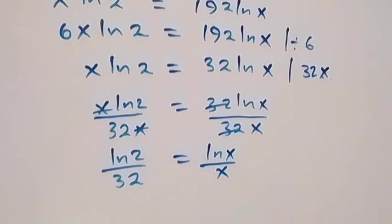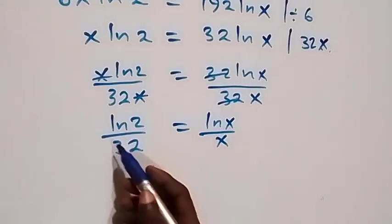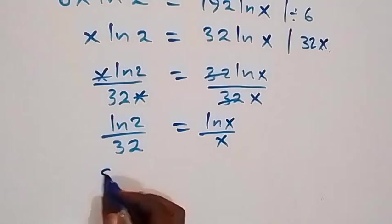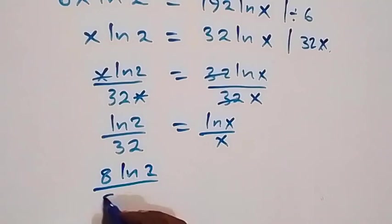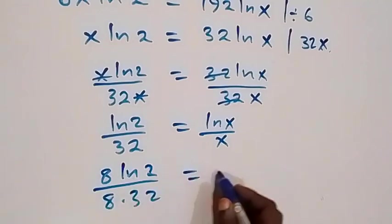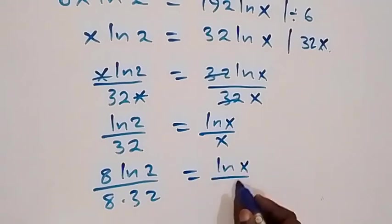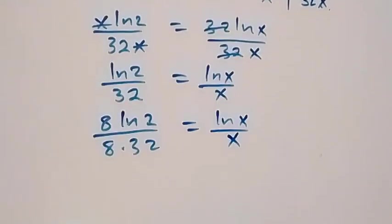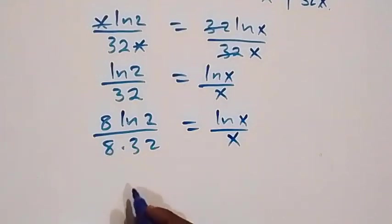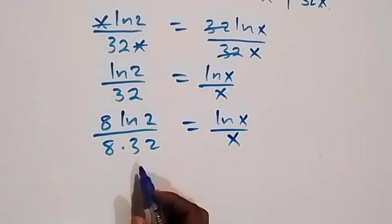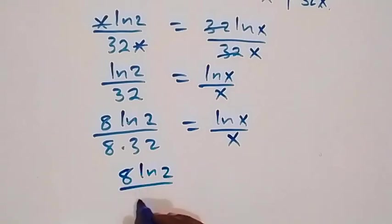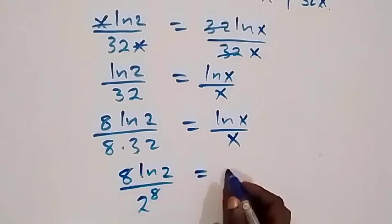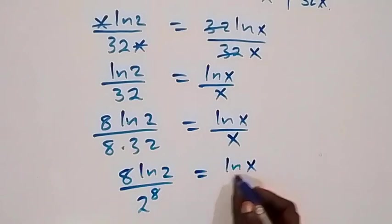From what we have here, let's multiply this side by 8. So we have the equivalent fraction as 8 ln 2 over 8 times 32, which is equal to ln x over x. And here, we can also rewrite 8 times 32 as 2 raised to power 8. So we have 8 ln 2 over 2 raised to power 8 equals to ln x over x.